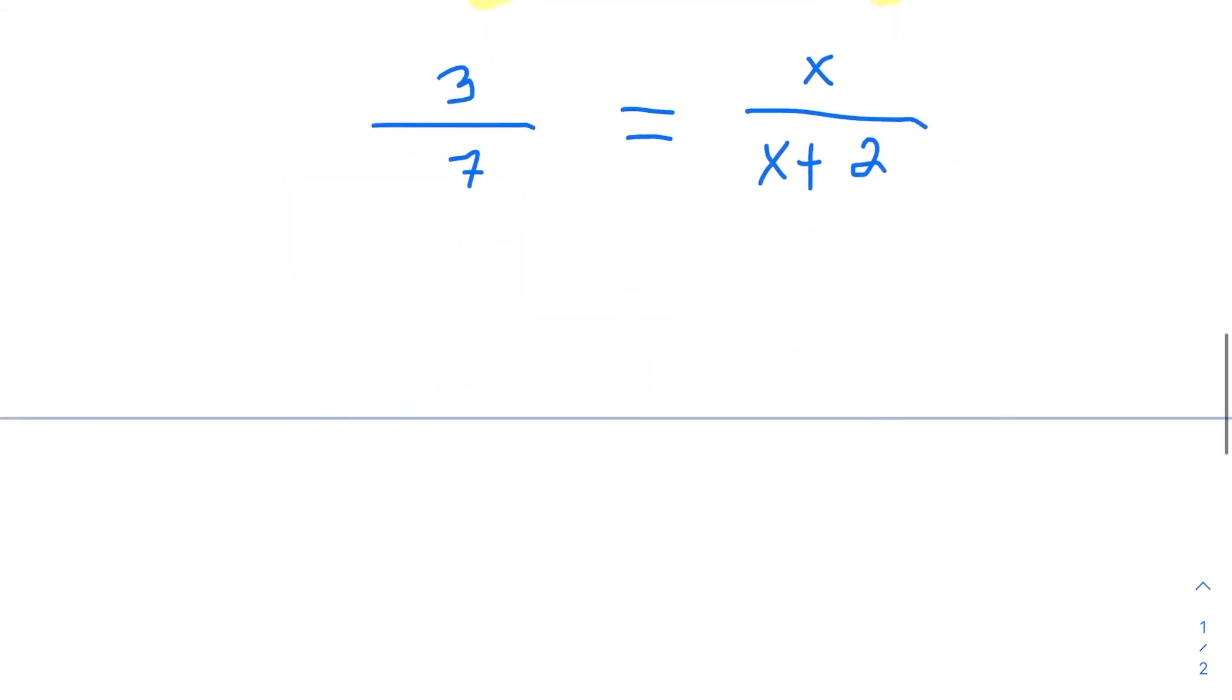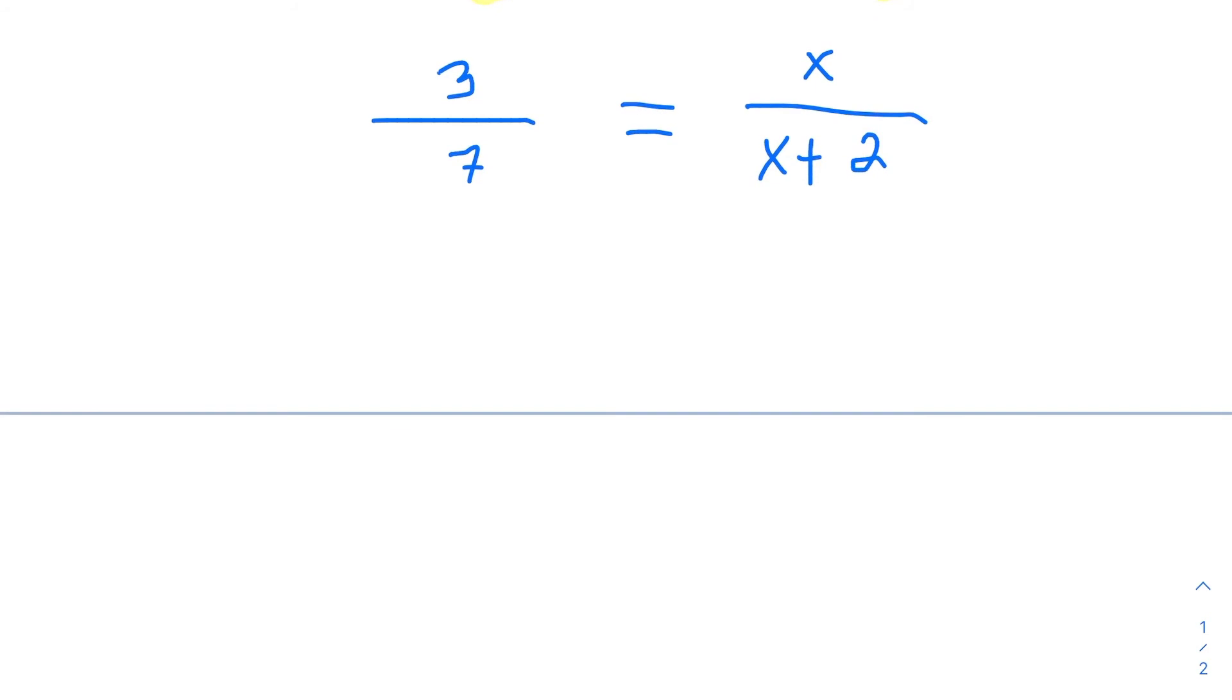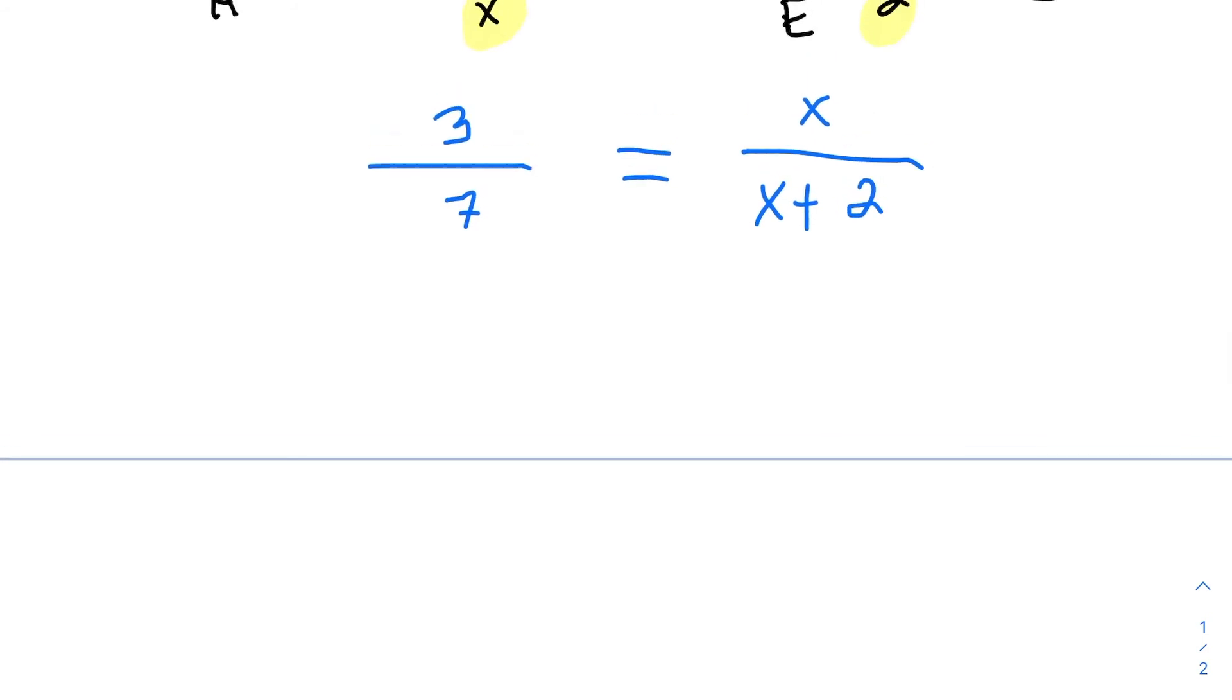So I'll write out that math below. We have three times X plus two. So when we distribute that, that'll give us three X plus six. And we have seven times X, that'll give us seven X. You can subtract three X to the other side, and you get six is equal to four X, divided by four, and X will come out to three halves, or 1.5.